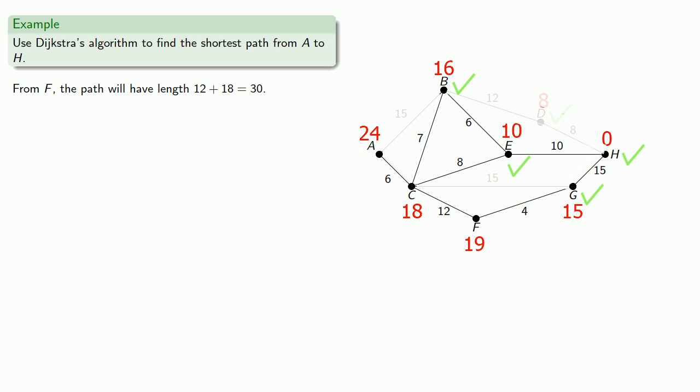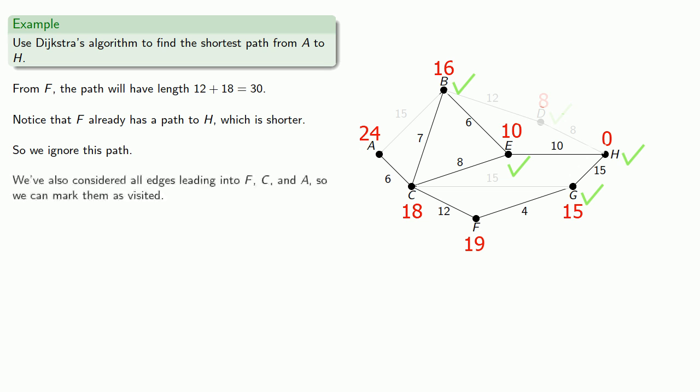Now from F, the path will have length 12 plus 18, that's 30. Notice that F already has a path to H which is shorter, so we'll ignore this path. We've also considered all edges leading into F, C, and A, so we can mark them as visited.